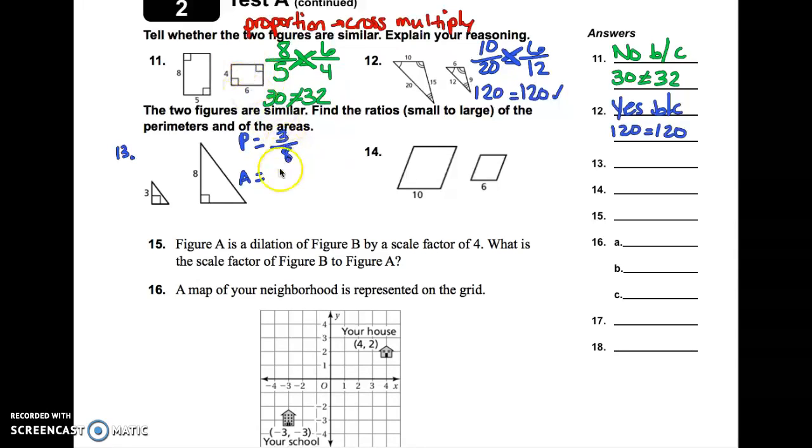Now, whenever you go to do the ratio of the areas, you're going to take that same fraction, but now we are going to square it. So, this will become 3 squared over 8 squared. And remember, whenever you square something, you are multiplying it by itself. So, 3 times 3 is 9, and 8 times 8 is 64. So, that would be your ratio for the areas. So, there's my two answers right there.